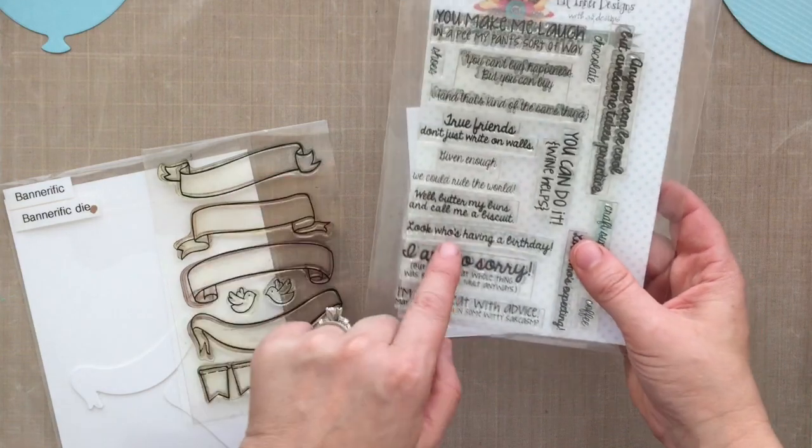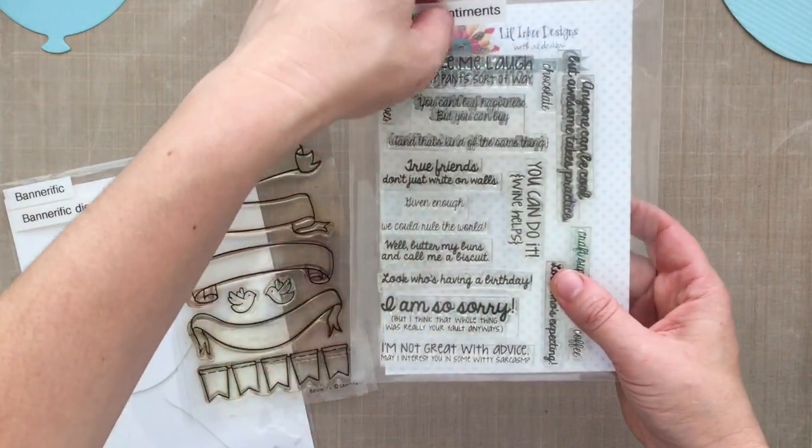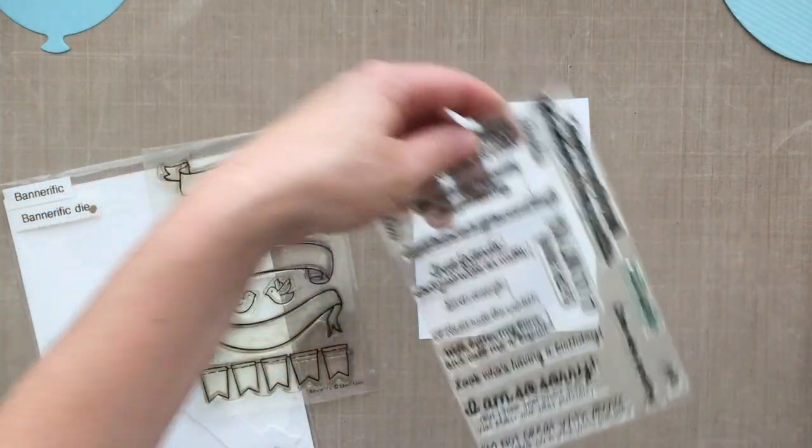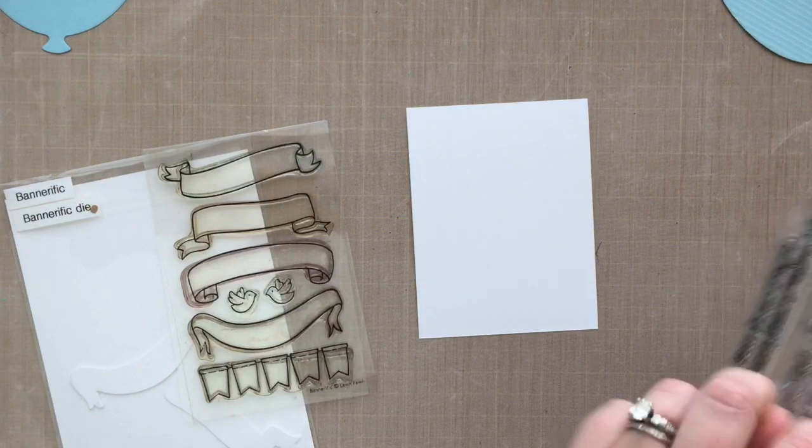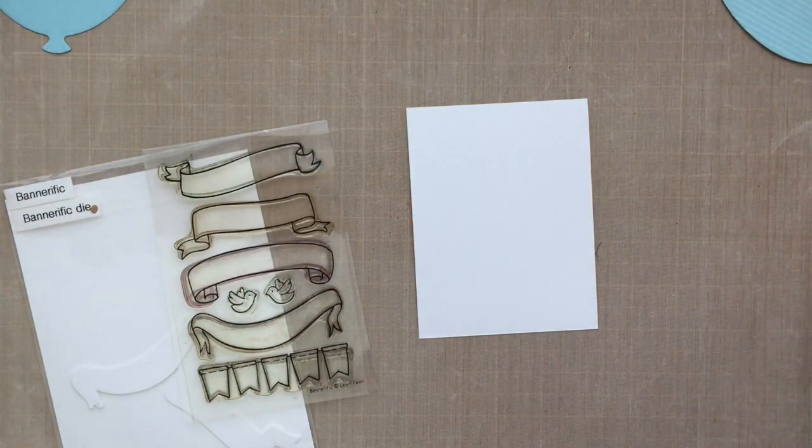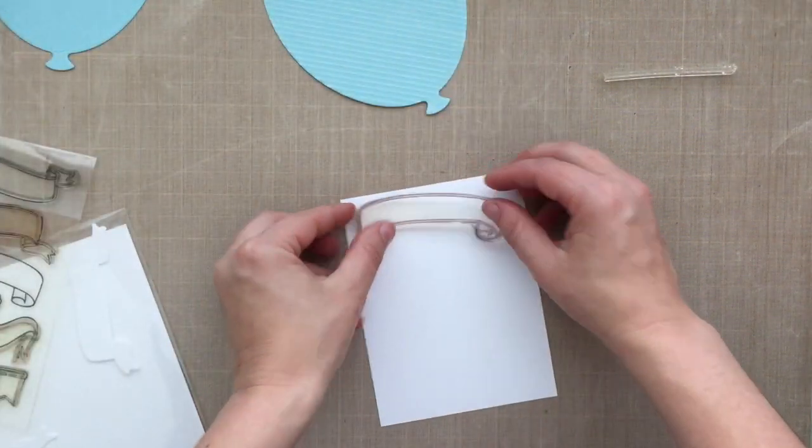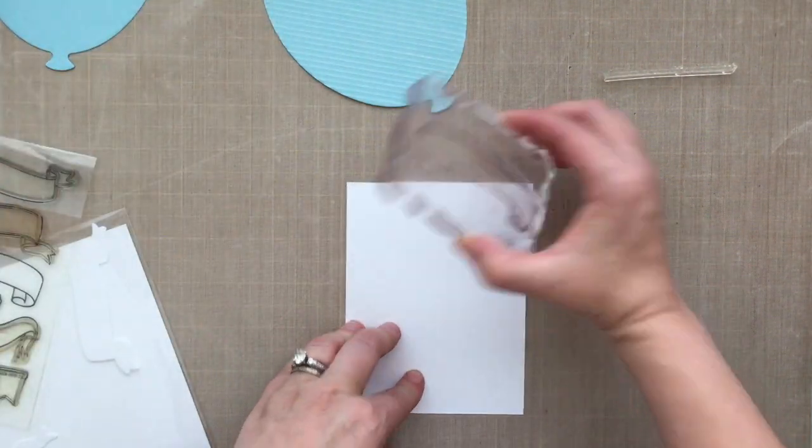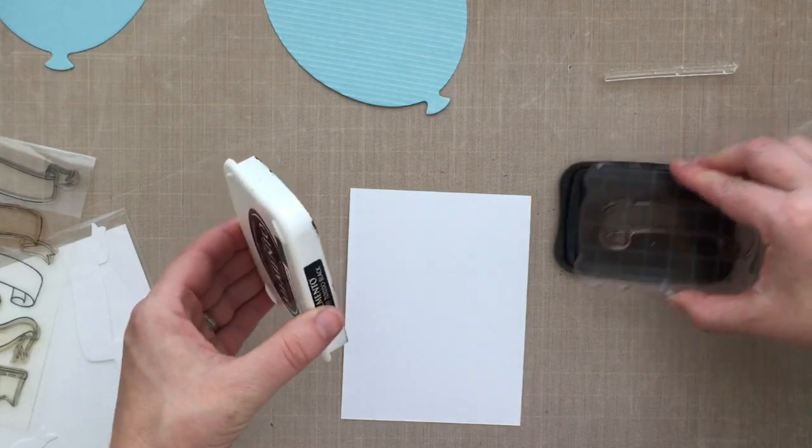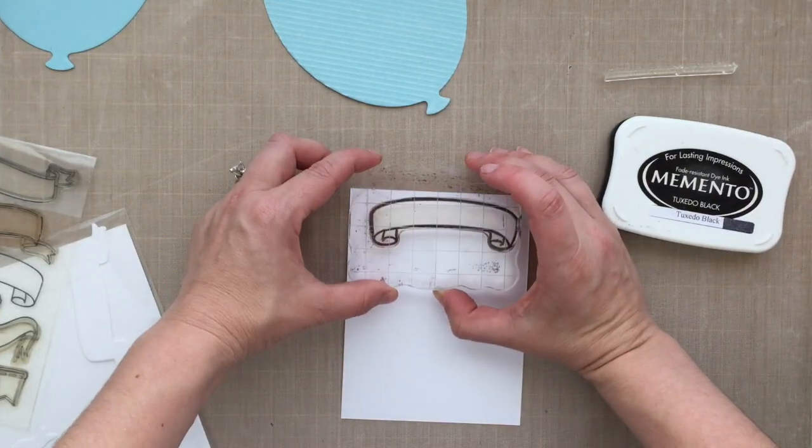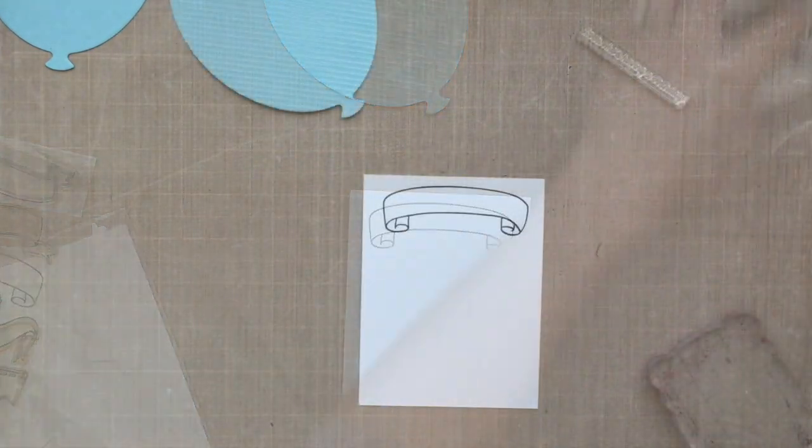I've got this sentiment stamp by Little Inker called Snarky Sentiments. It's hilarious. I'm going to link to it below in my YouTube description and also on the blog. Be sure to check out that set. It's so funny. I'm pairing that with the Bannerific stamp set by Lawn Fawn, and I'm stamping that with some Tuxedo Black ink by Memento onto some Neenah Solar White card stock because we're going to do a little bit of Copic coloring.